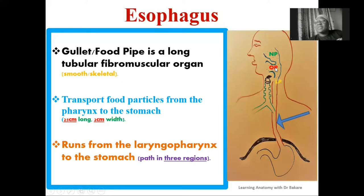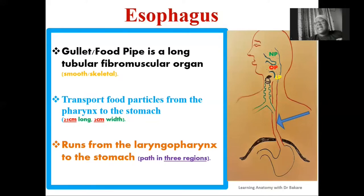Inferior to the oropharynx, we have the laryngopharynx. This is the sub-region of the pharynx located behind the larynx, and that is why it is called the laryngopharynx. The larynx is a collection of cartilages joined together by muscles and ligaments, seen in the anterior part. The region posterior to it is the laryngopharynx. So the names of the sub-regions of the pharynx are drafted based on the structures located anterior to them.